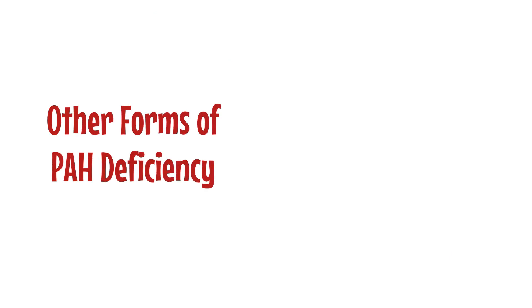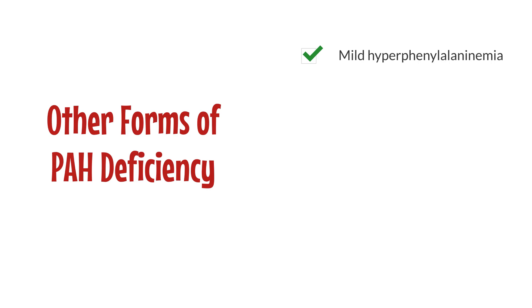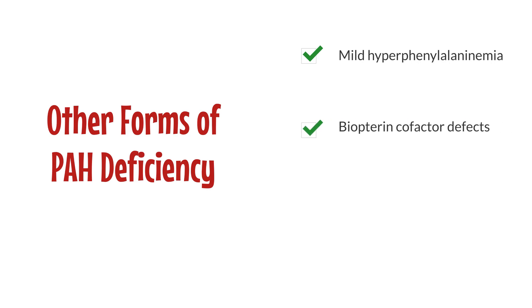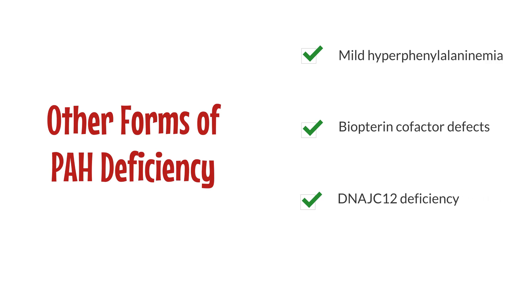Other forms of PAH deficiency may also be detected through newborn screening. These include mild hyperphenylalaninemia, biopterin cofactor defects, and DNAJC12 deficiency, which also causes hyperphenylalaninemia.